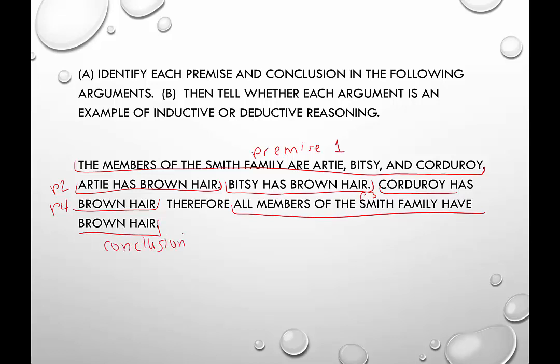What do we think? Is this inductive or deductive reasoning? Based on the four premises, this is actually deductive reasoning. Because we're given the facts that we know the entire family — Artie, Bitsy, and Corduroy — and each one of them had brown hair. We can make the conclusion that everyone in the Smith family has brown hair. This was a little tricky, but it goes through every single person and that fact is true for all of them. So that is an example of deductive reasoning.